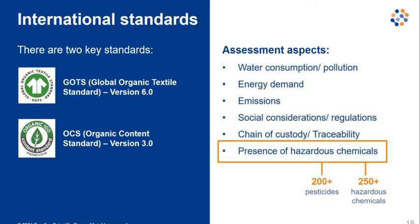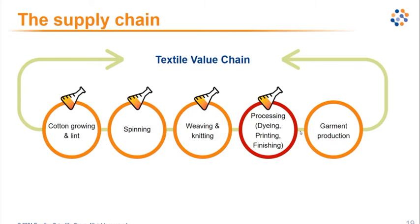Here we can see an example of a textile value chain for cotton production — from growing cotton to producing a garment. We want to highlight the steps where the addition of chemicals, and consequently possible hazardous chemicals, can occur. Processing is shown as the fourth step in this example, but it could occur before or after spinning depending on where dyeing, printing, or finishing happens.